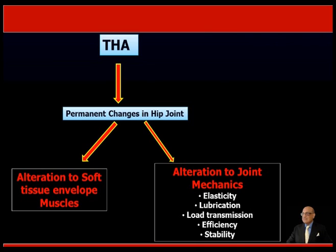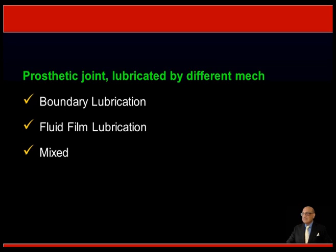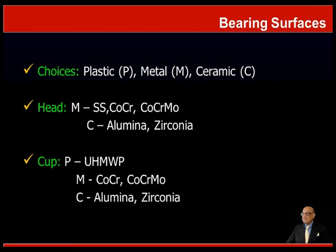In total hip replacement there are permanent changes in the hip joint: alteration to the soft tissue envelope—the muscles around the hip—and alteration in joint mechanics. Because of the elasticity of the components, lubrication and load transmission must be done efficiently to allow stability of the hip joint. Regarding lubrication, the normal hip uses elasto-hydrodynamic lubrication where synovial fluid is trapped, providing good load-bearing capacity. In a prosthetic joint, lubrication is very different and occurs by boundary lubrication, free fluid lubrication, or mixed lubrication, which is usually seen in most clinical situations.